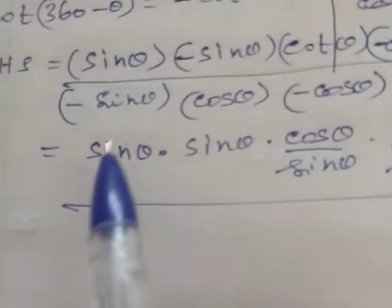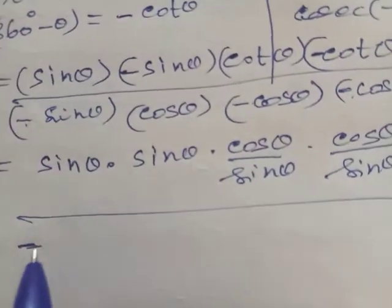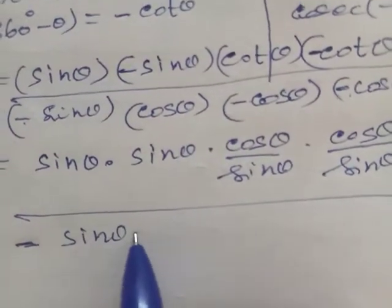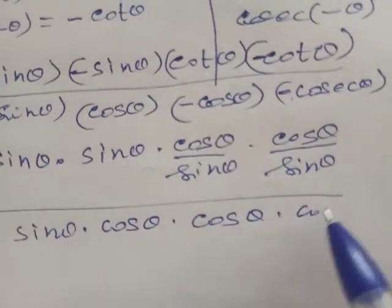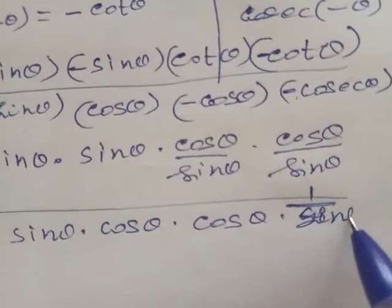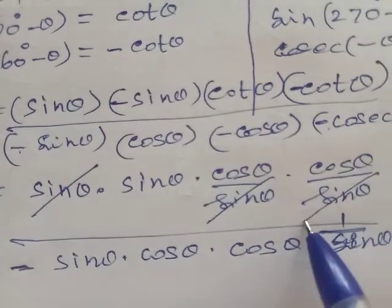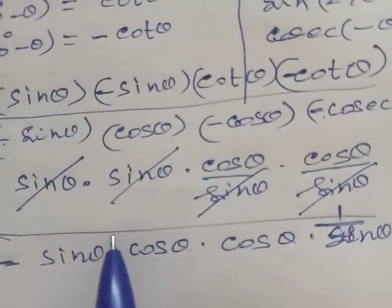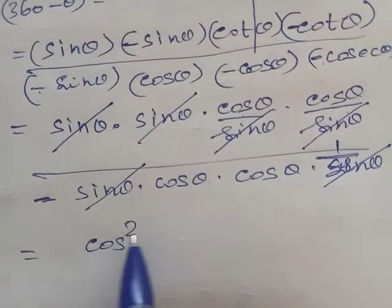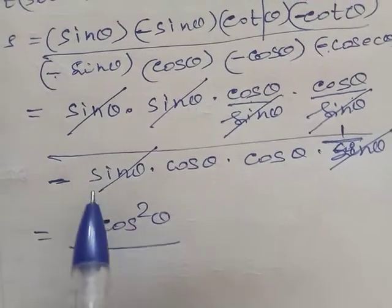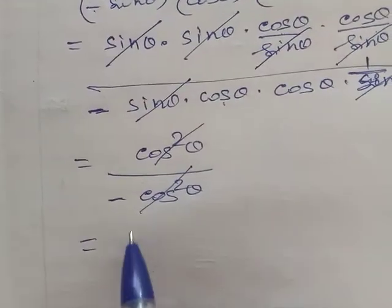In the numerator we have minus and minus, making it positive: Sin θ · Sin θ · Cos θ · Cos θ. In the denominator: minus · minus gives plus, so Cos θ · Cos θ · Sin θ. After substituting, cos θ divided by sin θ gives us 1 over sin θ. The sin θ terms cancel, the cos squared θ terms cancel, leaving minus 1.